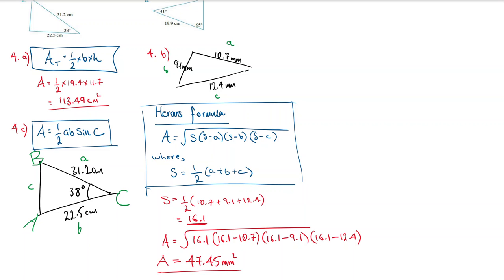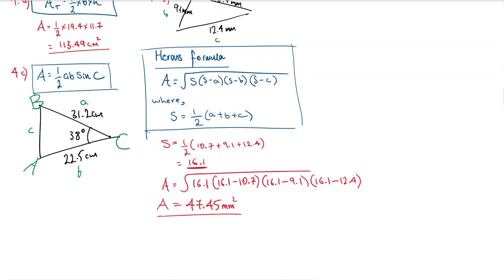So area is equal to one half times a, which is 31.2, times b, which is 22.5, times sine 38.